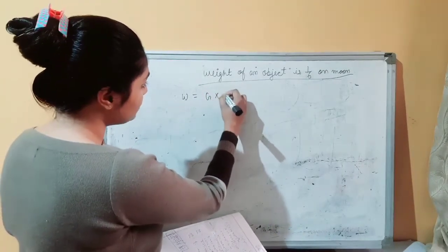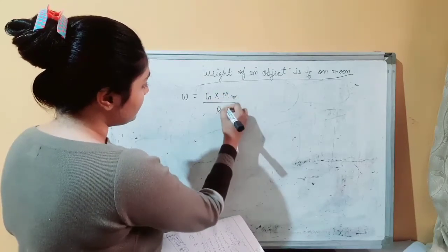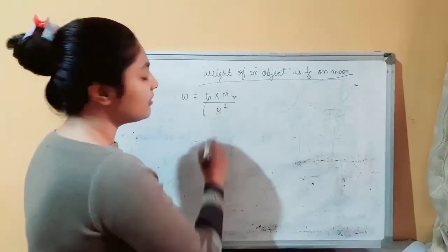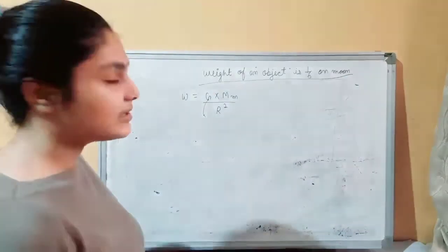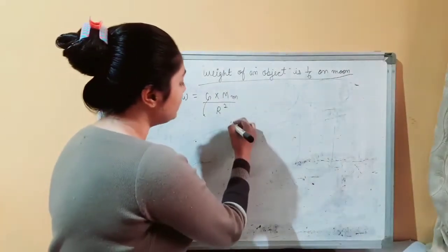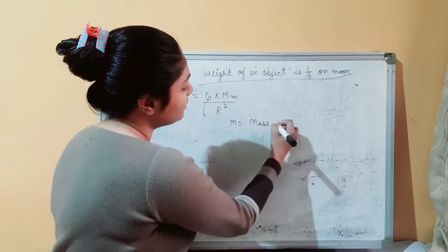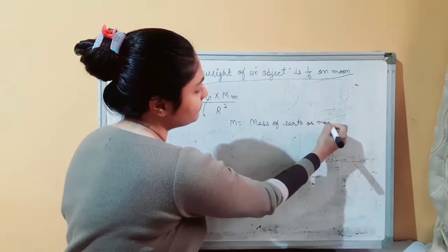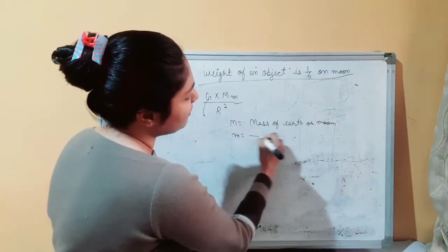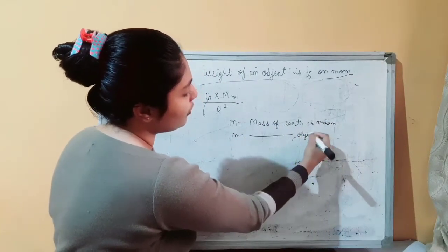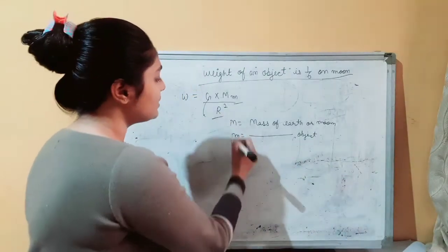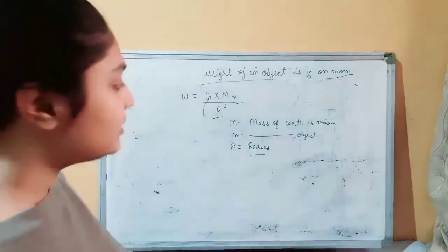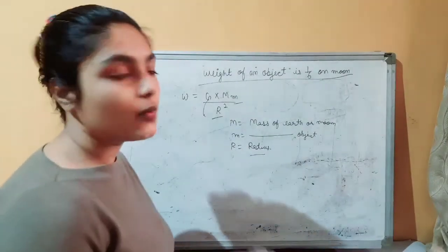Weight is equal to G times capital M times small m, upon r squared. Here, G is the gravitational constant (9.8), capital M is the mass of Earth or Moon, small m is the mass of the object, and r is the radius. Let's start our derivation to prove that it is 1/6th.